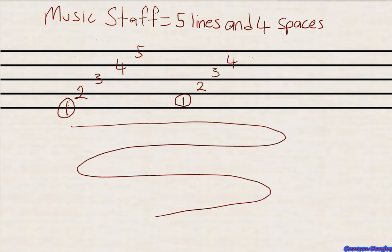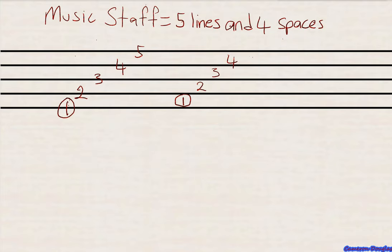This section below the staff is a space, yes, but it's not part of the music staff. Neither is the section above. So we don't consider those to be part of the music staff. When we count the spaces, we only look at the spaces within the lines, or in between the lines of the staff. So the first space starts here.